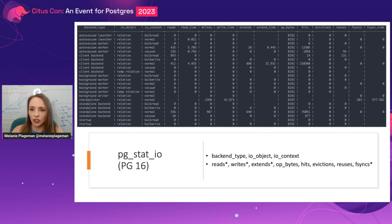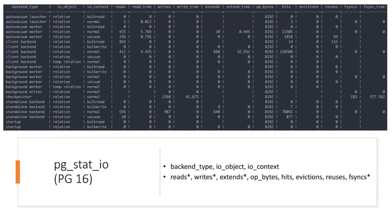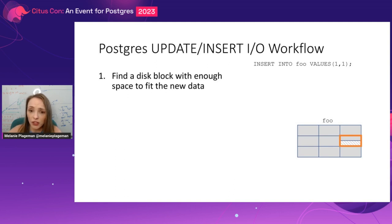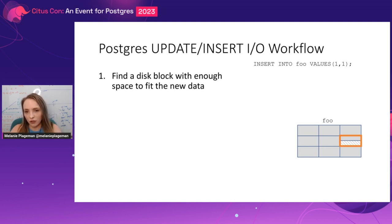You can see that we have read, write, and fsync time — so we can see the timing. And we have some specific columns that are relevant for buffer access strategies, like reuses. So let's go back to the gaps: why do we care about counting flushes and extends separately? In PGStat.io, we call flushes 'writes' because we're able to distinguish writes from extends. To explain this, I want to walk you through from an internals perspective the update or insert workflow in Postgres.